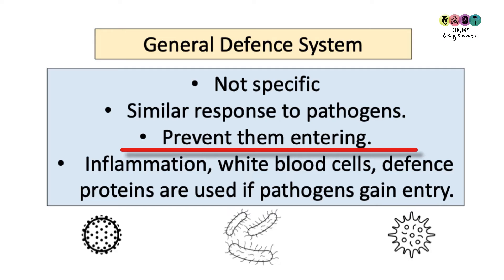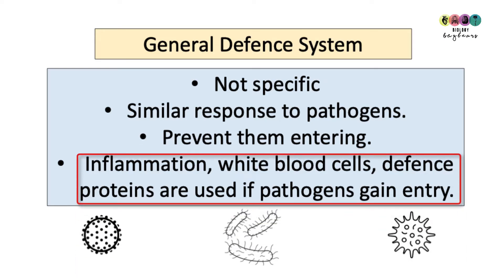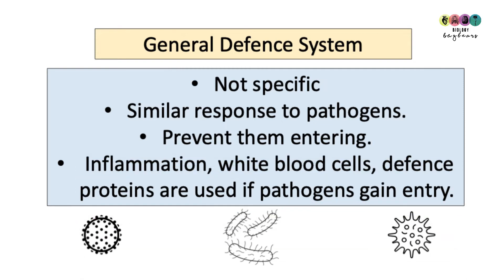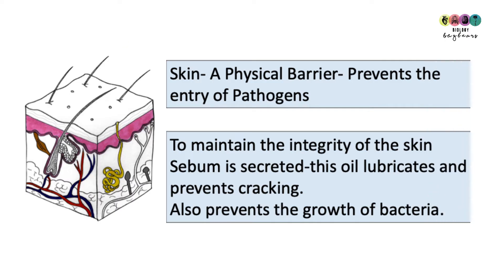But if pathogens do enter, the general defense system will use inflammation, white blood cells, and specialized defense proteins. The first part of the general defense system is your skin — it's a physical barrier that prevents the entry of pathogens.